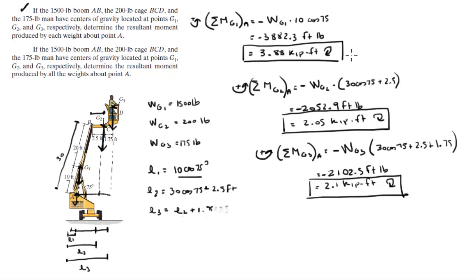That's it for the first problem. Final answer for the first moment, final answer for the second moment, and final answer for the third moment. Now the second question: they basically want you to find the resultant moment produced by all these weights.